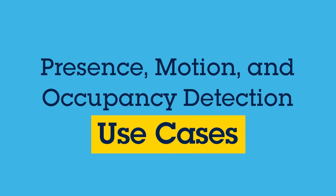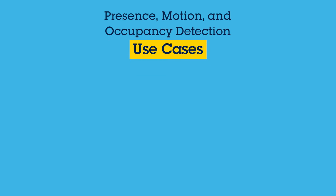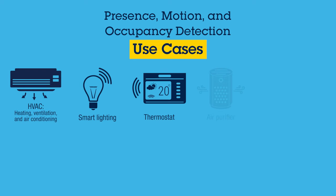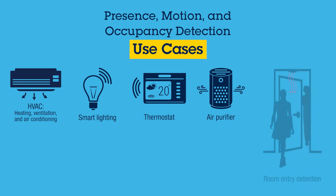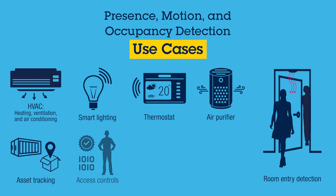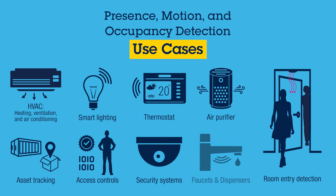What are some application use cases which can benefit from this sensor? Smart home automation devices such as HVAC, lighting, and thermostat can leverage this technology to enable system activation only when a person is present. Other application use cases such as occupancy monitoring, asset tracking, access controls, security systems, and many others that require detection of human presence or motion can also be considered.